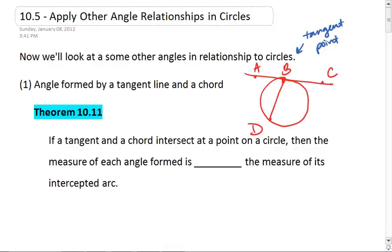then the measure of each angle formed is half the measure of its intercepted arc. This means that angle 1 is half of arc BD, and angle 2 is half of arc BED.